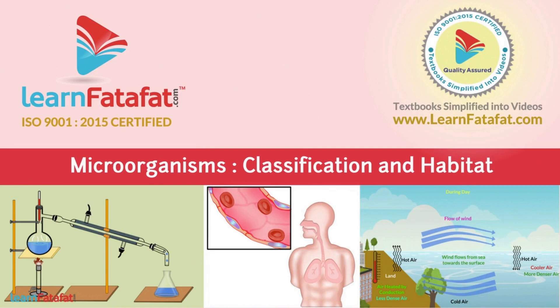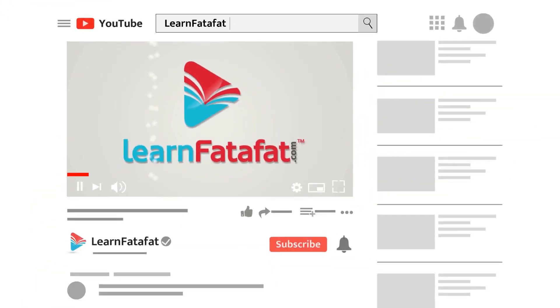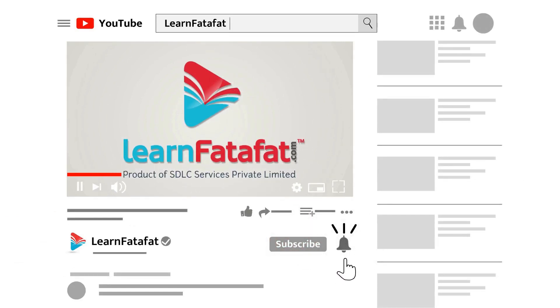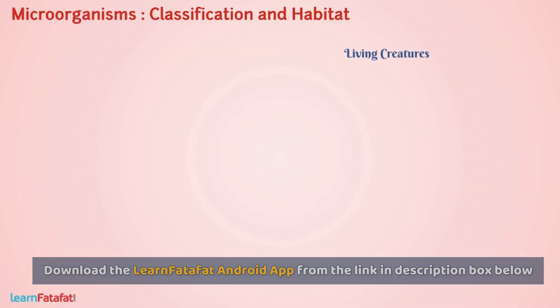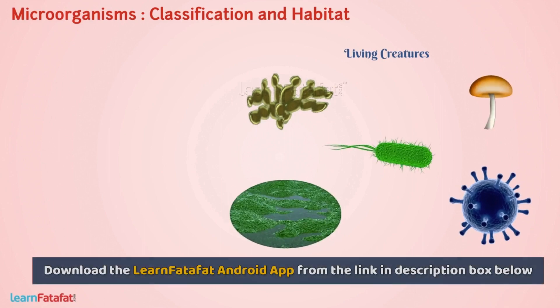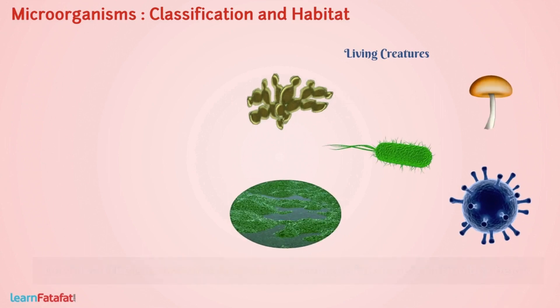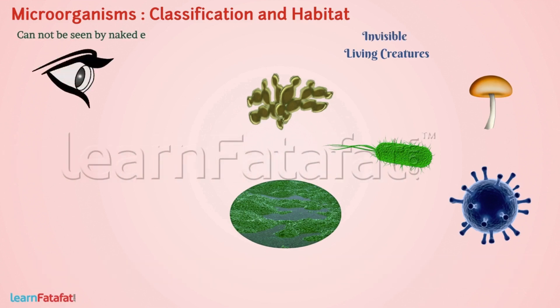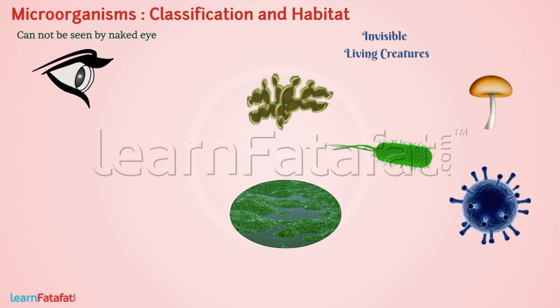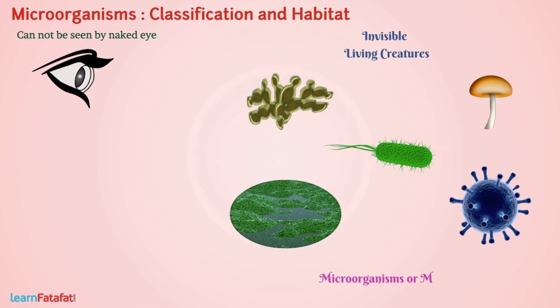Microorganisms: Classification and Habitat. Besides animals and plants, there is a world of living creatures that are present everywhere, but are so small that these cannot be seen by the naked eye. These are called Microorganisms or Microbes.